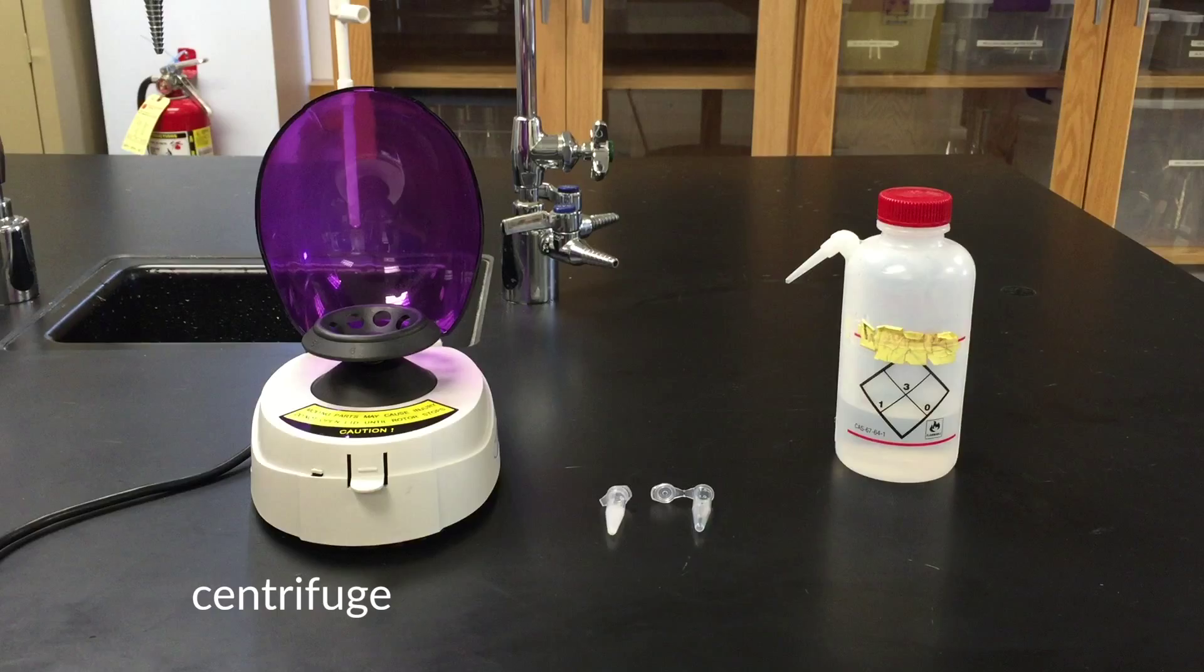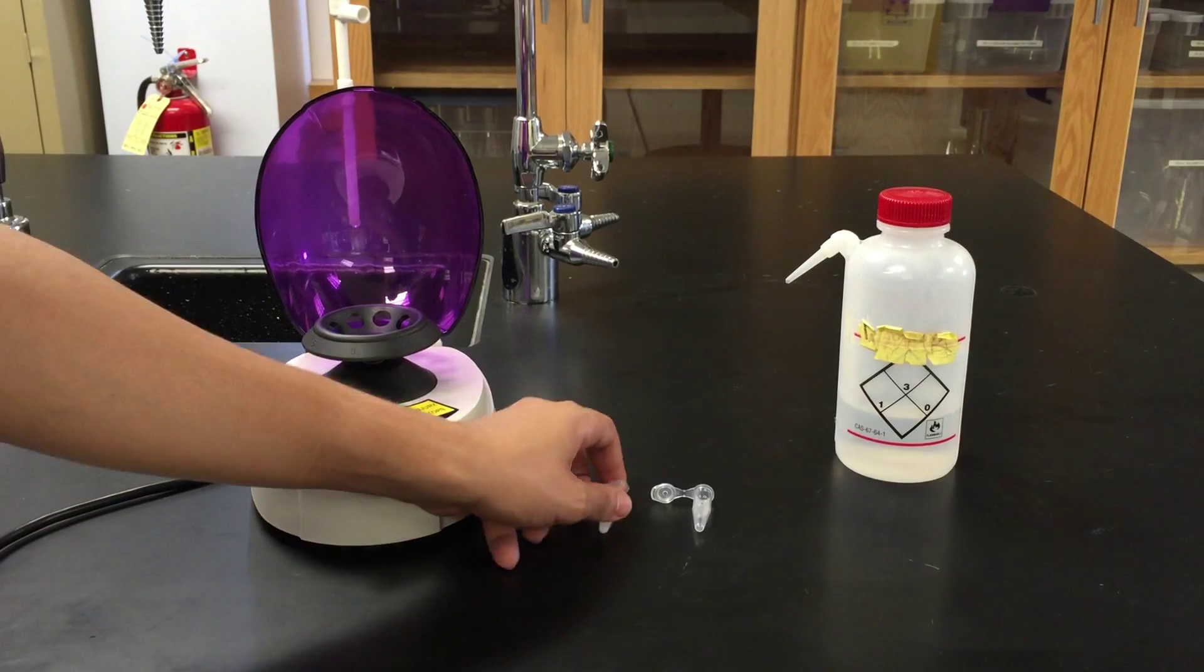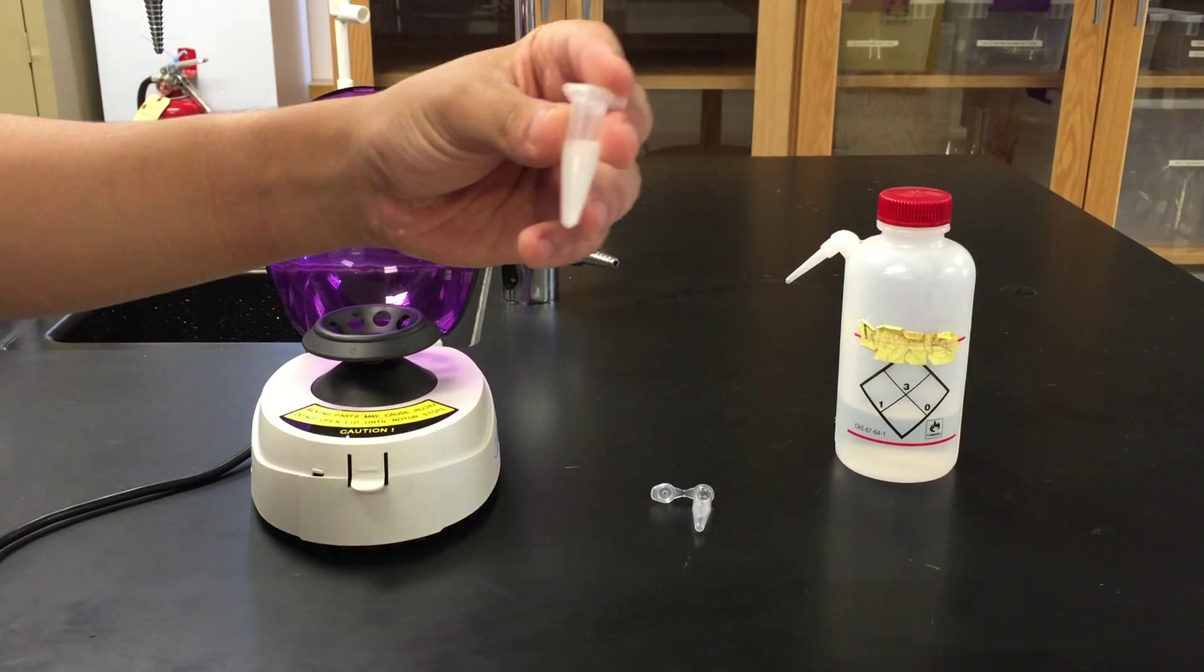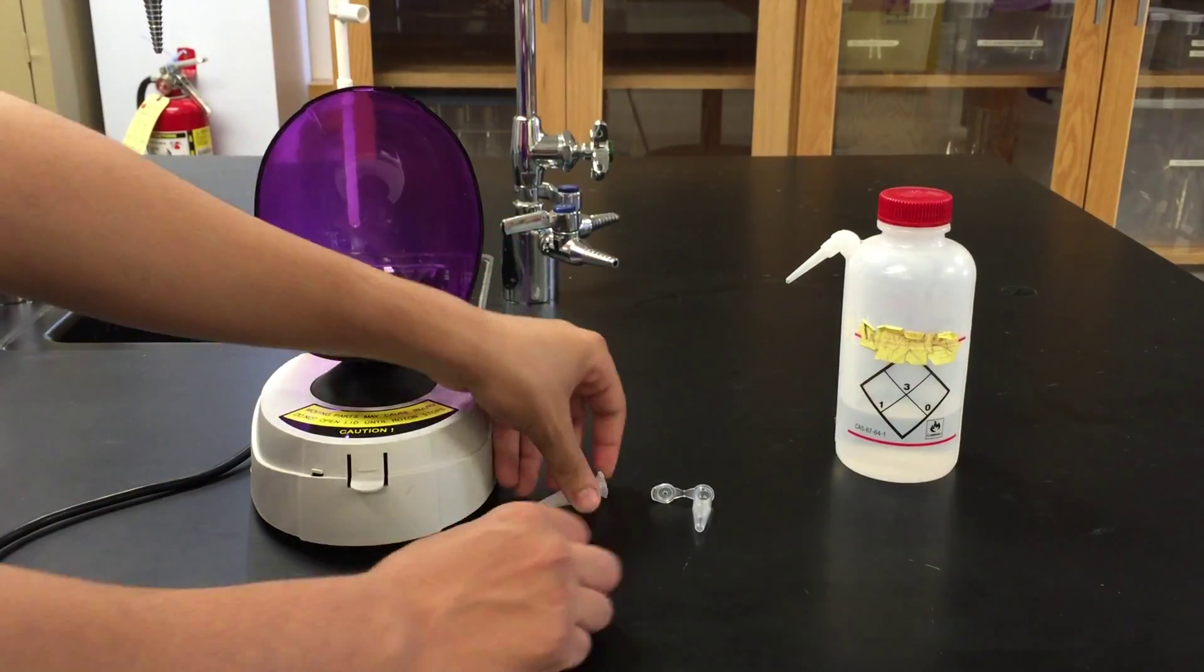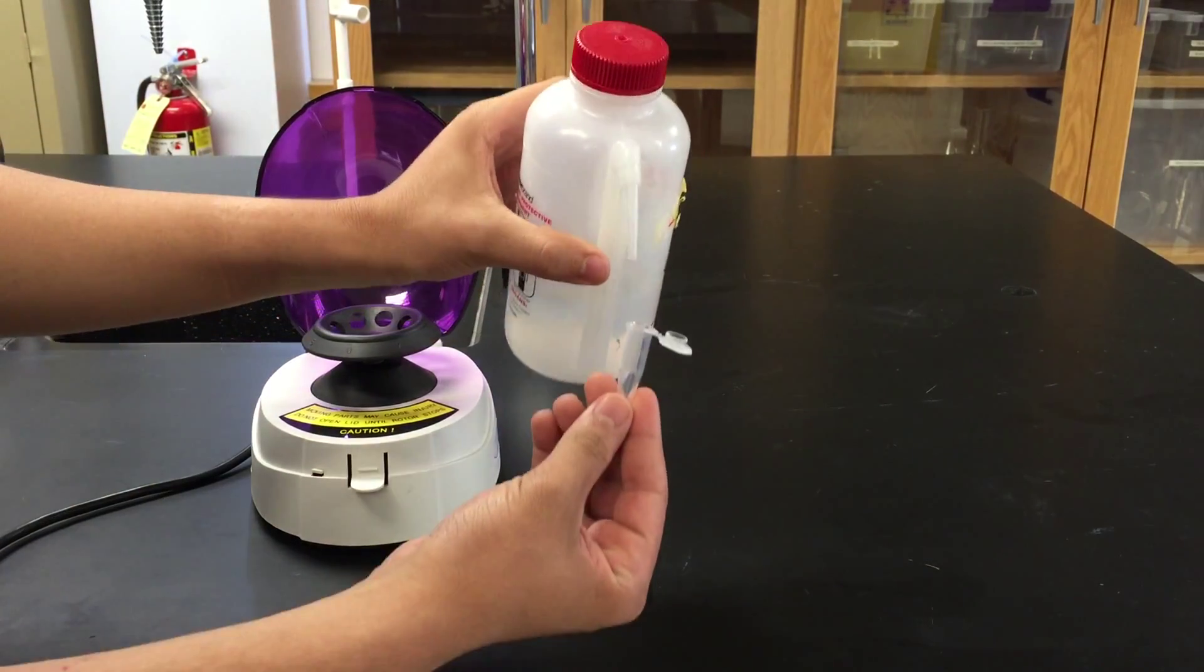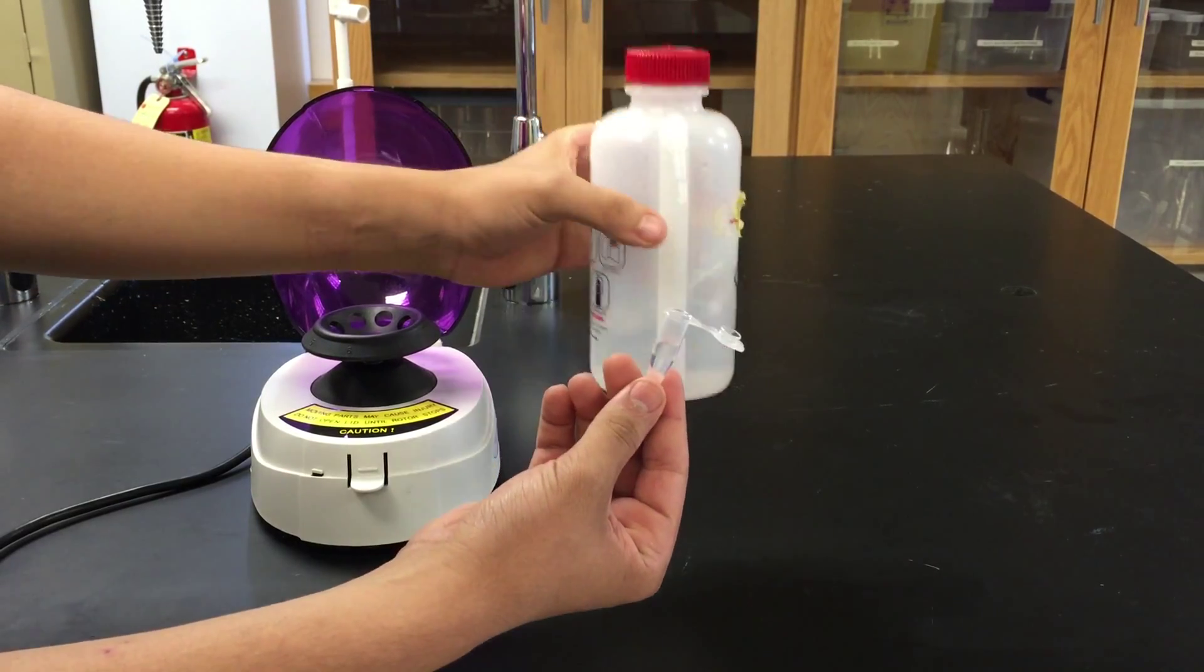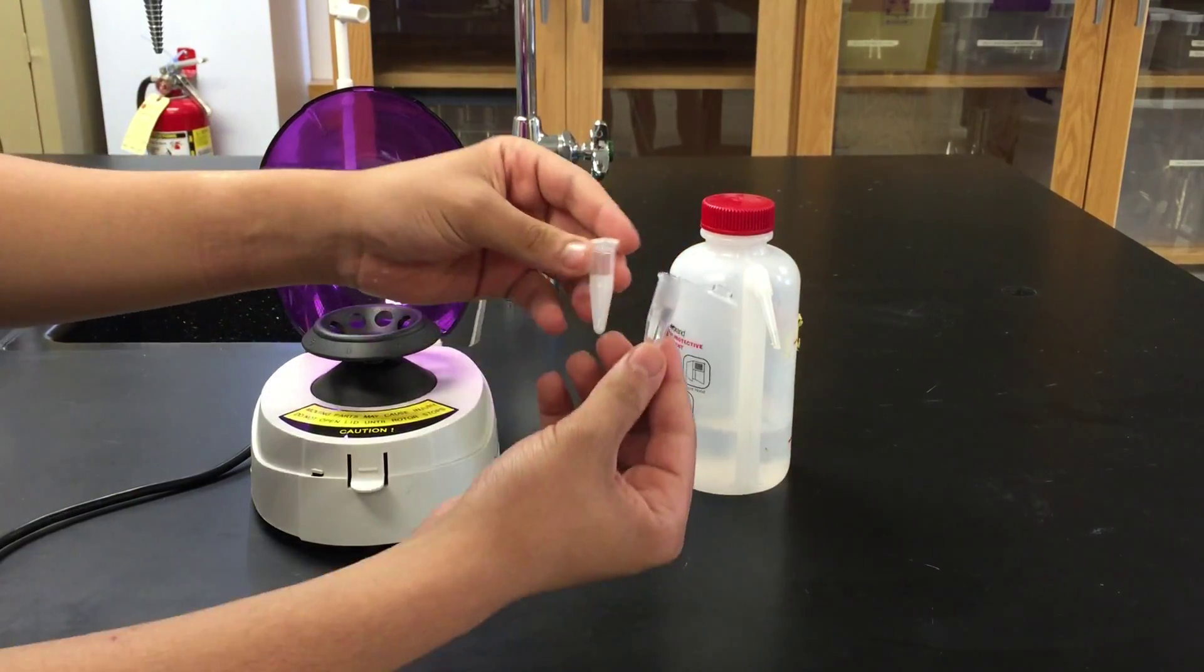Here we have a centrifuge, microcentrifuge tubes, and a DI water squirt bottle. The first tube has a solution from which we want to get the precipitate, and the second one we're going to fill with water, so that when we put the two tubes in the centrifuge, the machine will be symmetrical. Try to fill up the second microcentrifuge tube as close as you can to the volume of the first one.